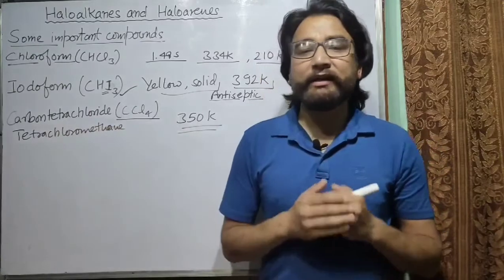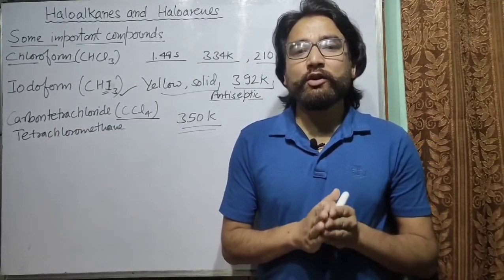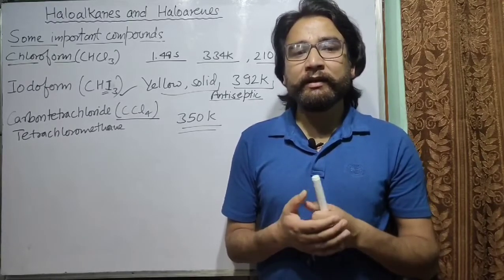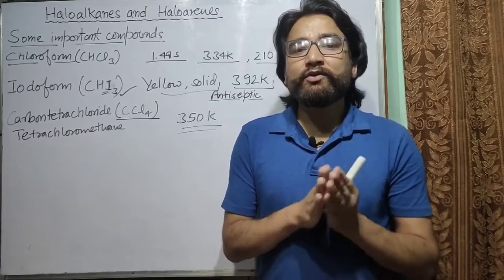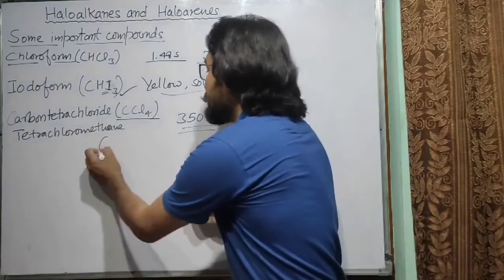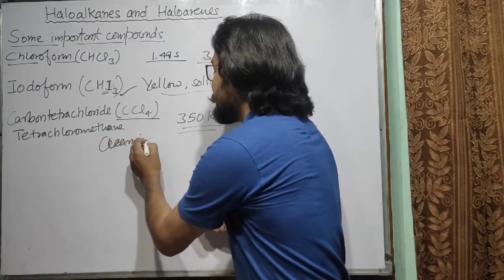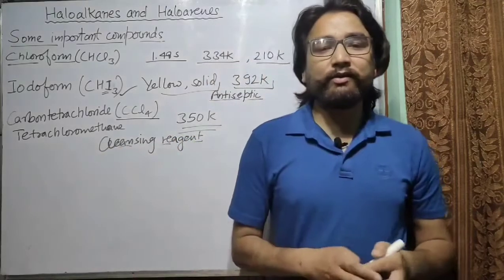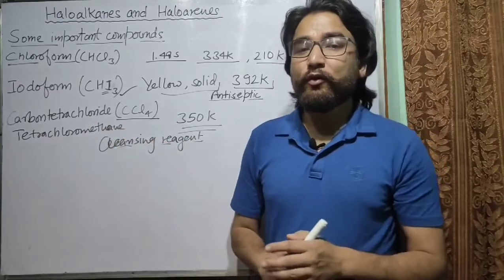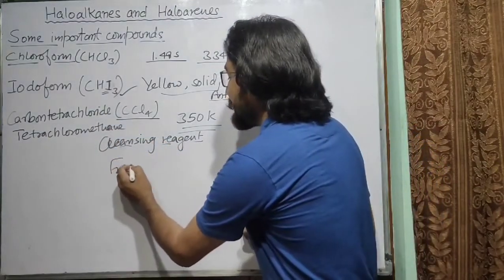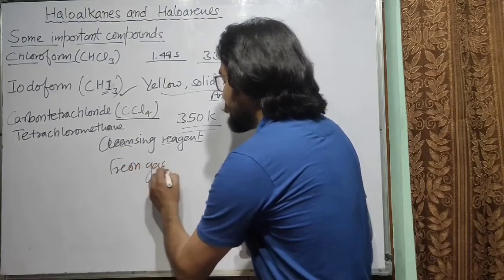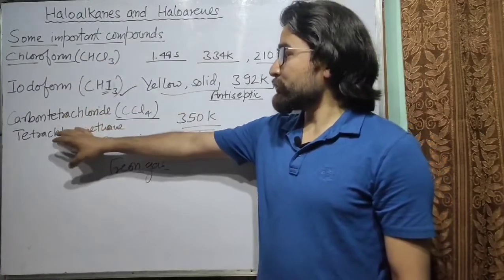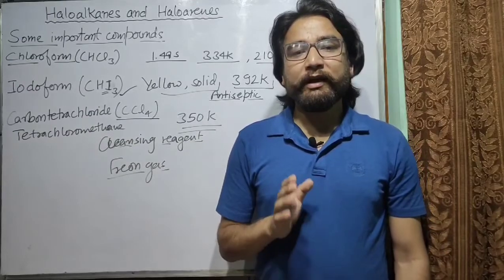Regarding the uses of carbon tetrachloride: because it is a very good solvent, it is used as a solvent for fats, oils, resins, and waxes. It is also used as a cleansing reagent. Additionally, it is used for the manufacture of chloroform and freon gas, which is used for refrigeration.